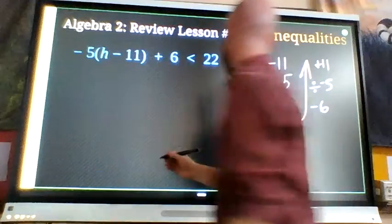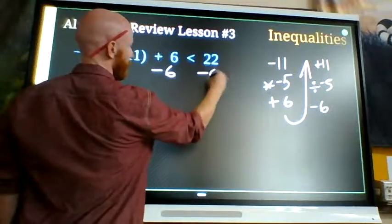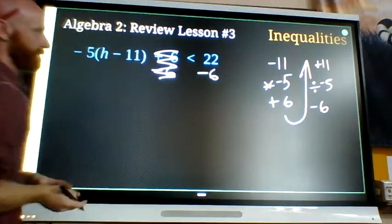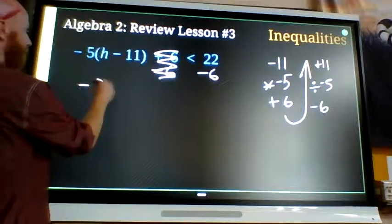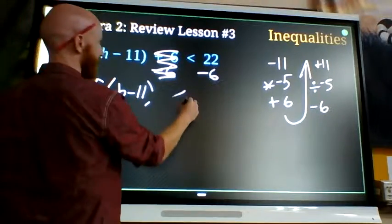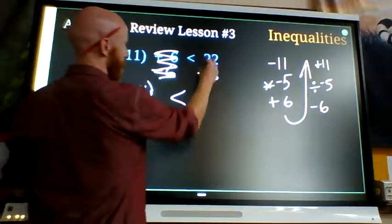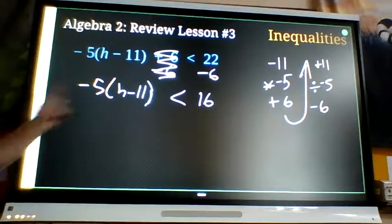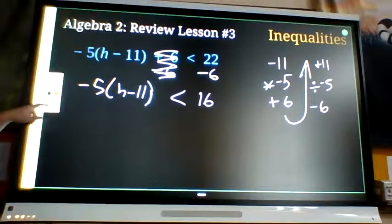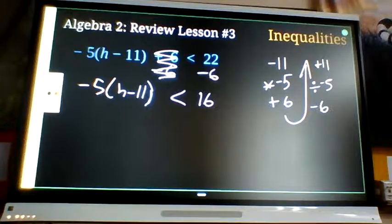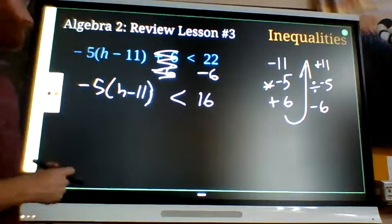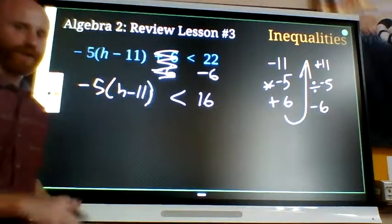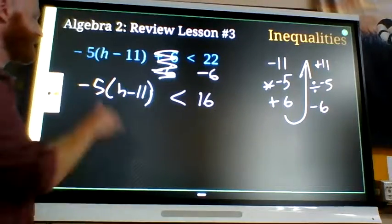So, subtract 6 to get rid of this and to keep balance. We got negative 5h minus 11 is less than 16. This is going to be the key step right here where something is different. I'm going to divide by negative 5. If I ever multiply or divide by a negative number.